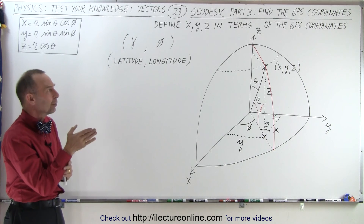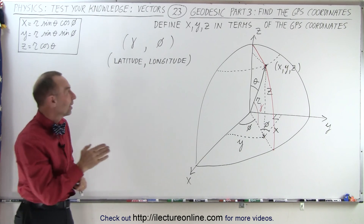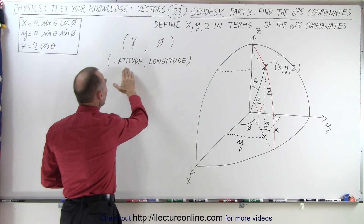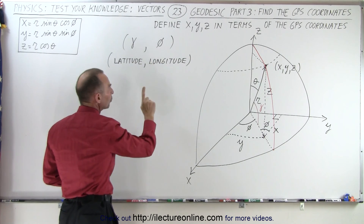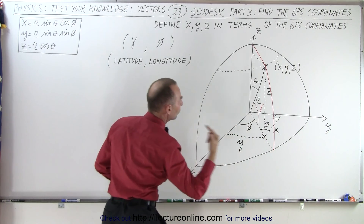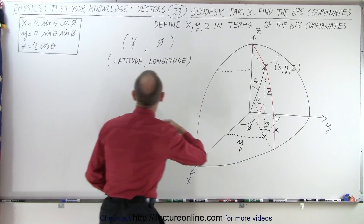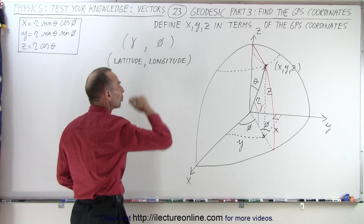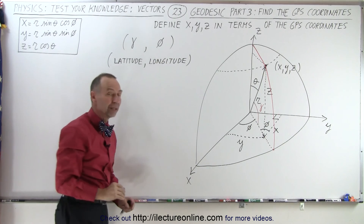So how do we do that? Well, notice that in GPS coordinates we have latitude and we have longitude. The longitude goes around the Earth parallel to the equator. The latitude goes up and down towards the North Pole or the South Pole.